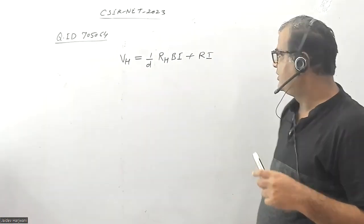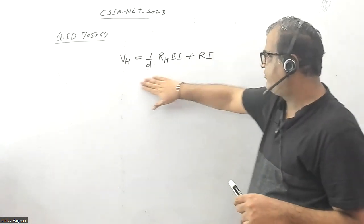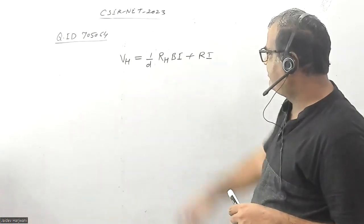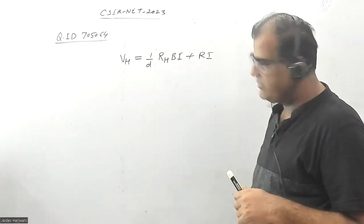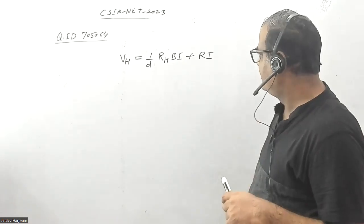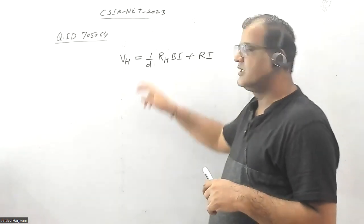The DC formula for Hall voltage is given by V_H = R_H * B * I / D, where R_H is the Hall coefficient, B is the applied magnetic field, I is the applied current, and D is the thickness of the sample.